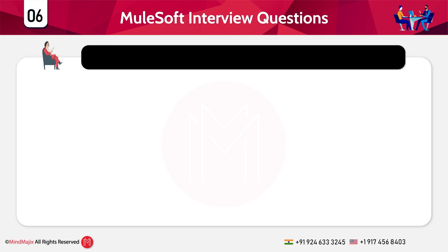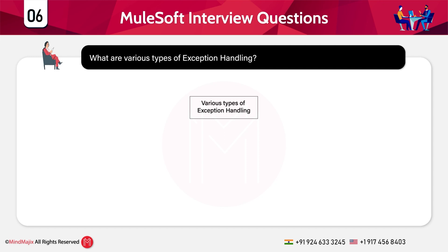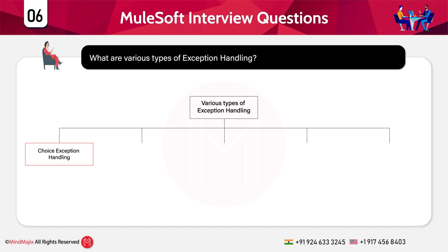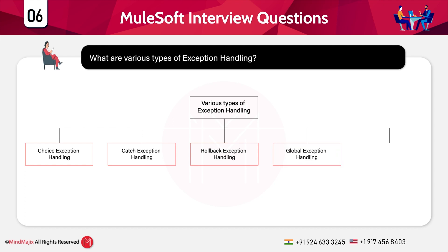What are the different types of exception handling? The various types of exception handling are: choice exception handling, catch exception, rollback exception, global exception, and default exception.